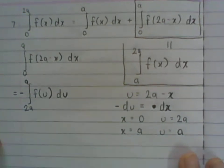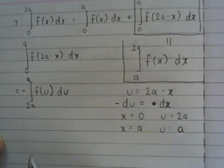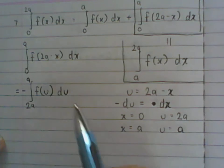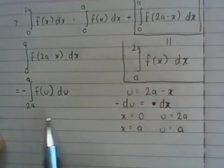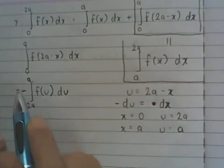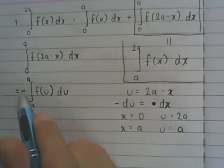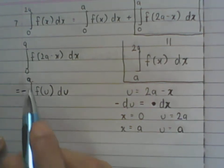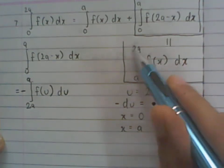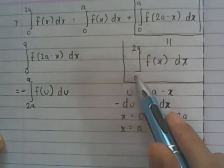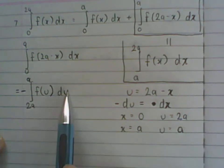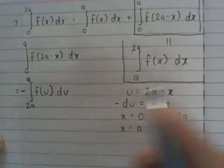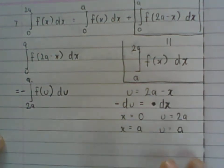We have technically proven this because, using one of the previous properties, if you have a negative outside, you can swap the limits and get rid of the negative. When you swap the limits, a goes down and 2a comes up, so we have 2a as the upper limit and a as the lower limit. And f(u)du is the same as f(x)dx—you can change the variable name from u to x.